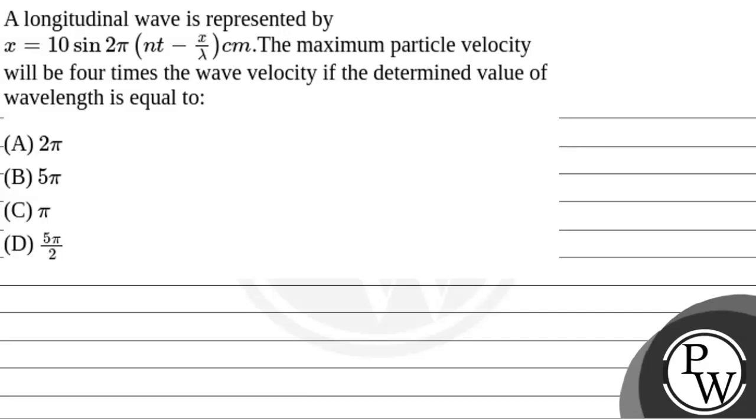Hello, let's see the question. The question is given that a longitudinal wave is represented by x equals 10 sin 2π(nt - x/λ) cm. The maximum particle velocity will be 4 times the wave velocity if the determined value of the wavelength is equal to. So we need to find the wavelength when maximum velocity of the particle will be 4 times the wave velocity.